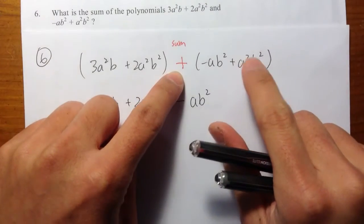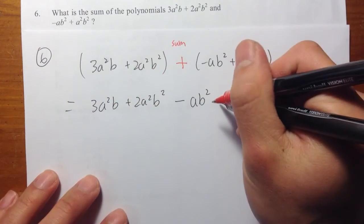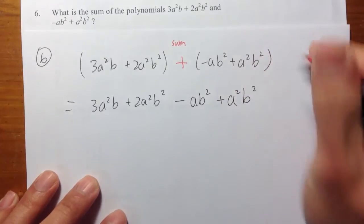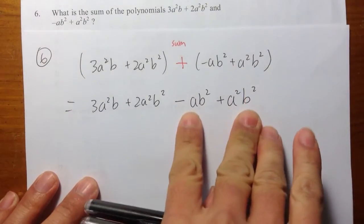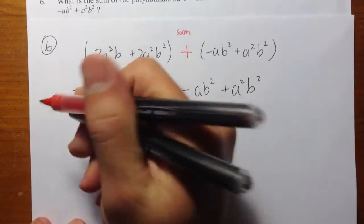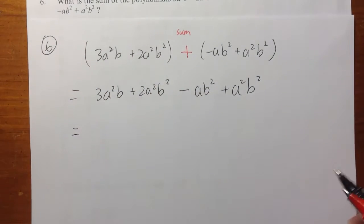And then positive times the positive is still a positive, plus a²b². So these two terms pretty much didn't change as well. And now we are going to look at if there's any like terms, and we can combine like terms whenever we can.